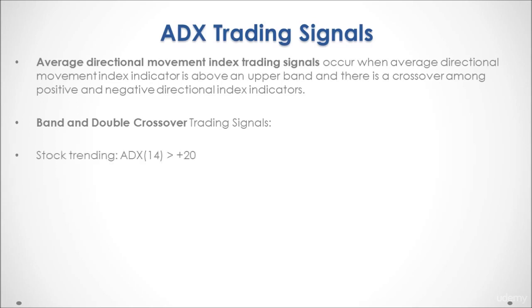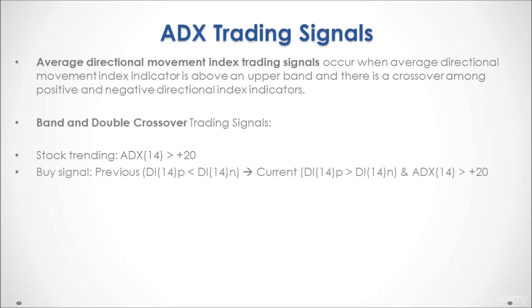First, we identify a stock as trending if our average directional movement index is above plus 20. We have a buy signal if the previous positive directional index was below the negative directional index and the current positive directional index is above the negative directional index, confirmed by the average directional movement index being above plus 20.